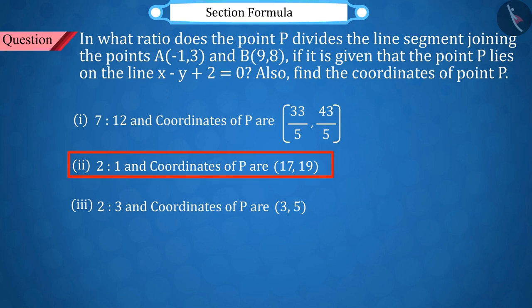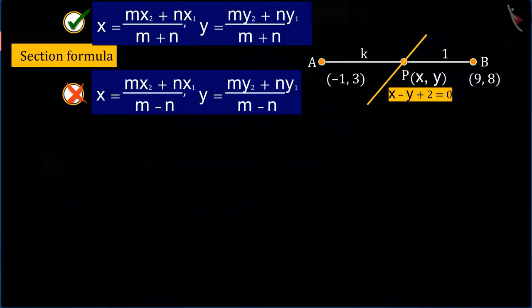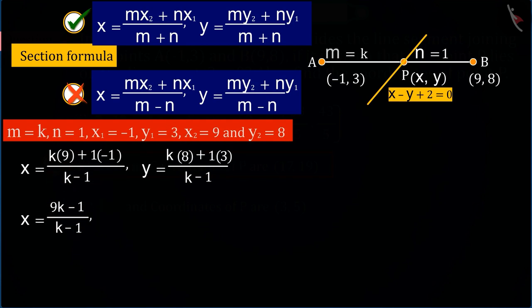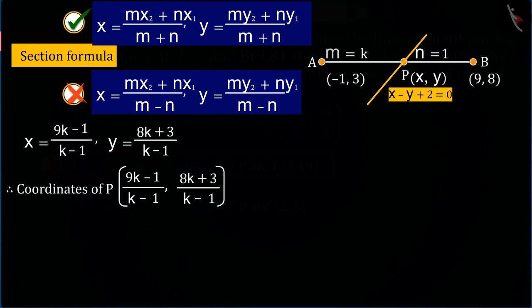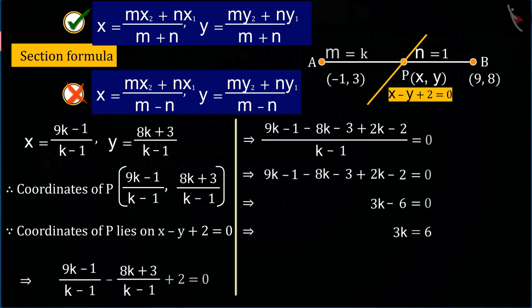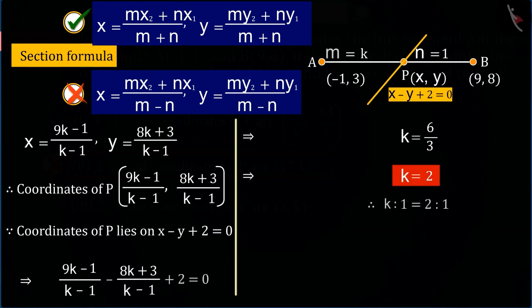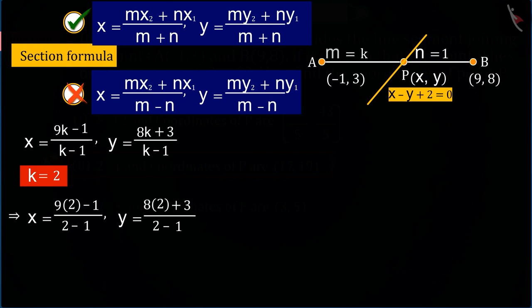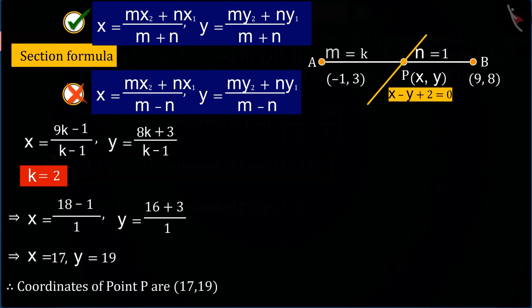If you chose the second option, it was a good try, but this is the wrong answer. Because in the section formula, in place of m plus n, m minus n was put and solved. That gives value of K as 2, and on this basis, we also find the coordinates of point P, and your answer goes wrong.